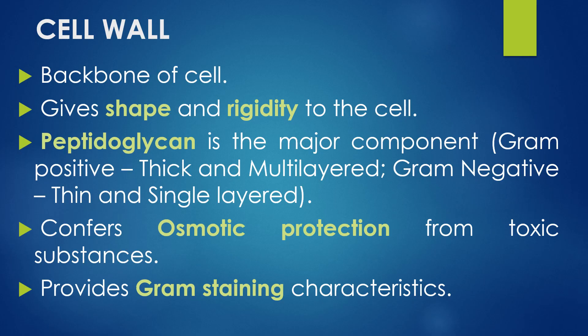The first part is the cell wall. The cell wall is the backbone of the bacterial cell and gives shape and rigidity to it. The major component of the bacterial cell wall is peptidoglycan. In gram-positive bacteria the peptidoglycan is thick and multilayered, but in gram-negative bacteria it is thin and single-layered. The cell wall confers osmotic protection to the bacteria from various toxic substances and also provides the gram staining characteristics. Based on the gram staining procedure, bacteria are categorized into gram-positive and gram-negative.